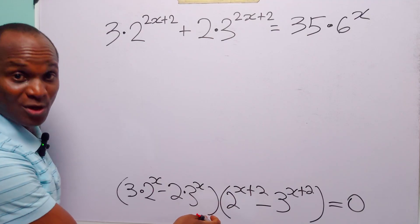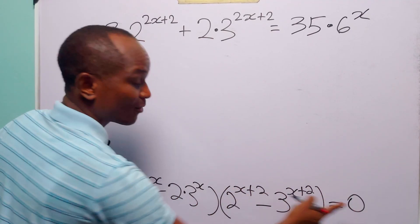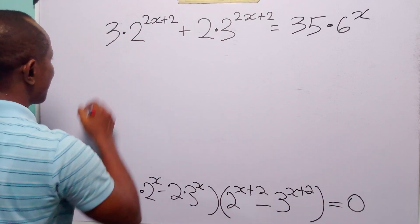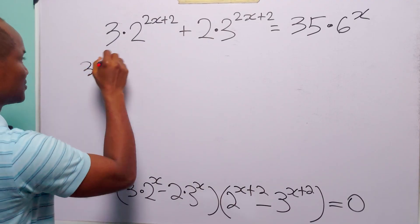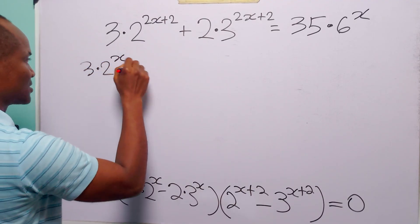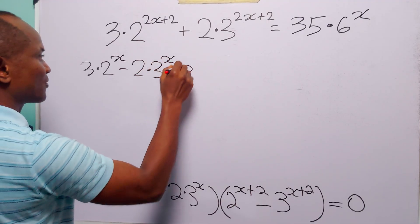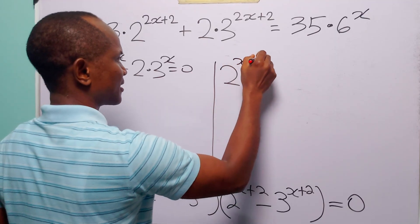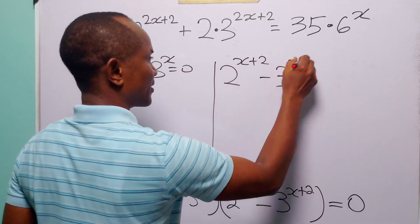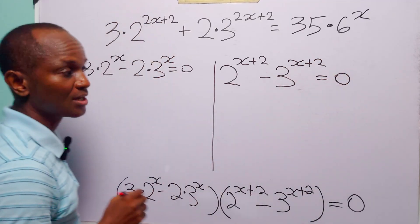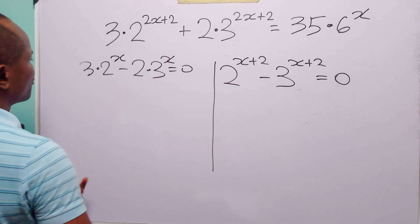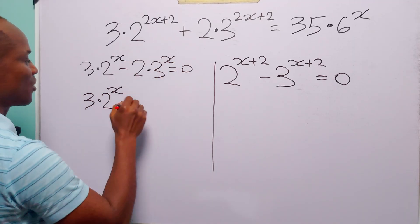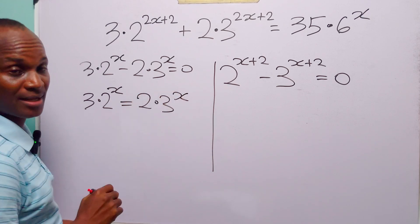Since the product of two factors equals zero, either factor can be zero. So either 3 times 2 to the power x minus 2 times 3 to the power x equals 0, or 2 to the power x+2 minus 3 to the power x+2 equals 0. From the first equation, 3 times 2 to the power x equals 2 times 3 to the power x.